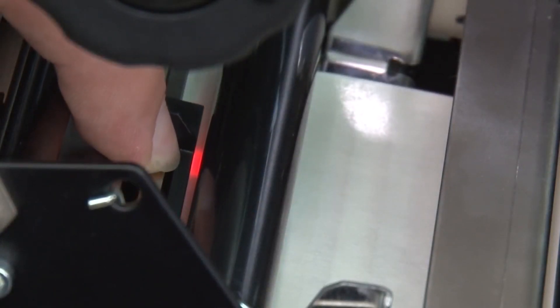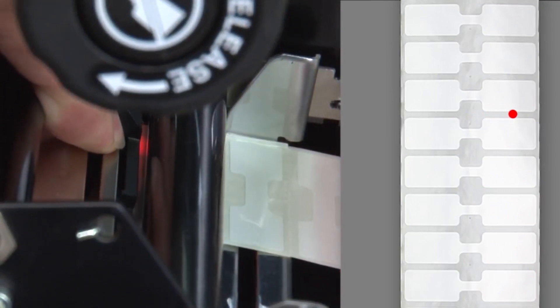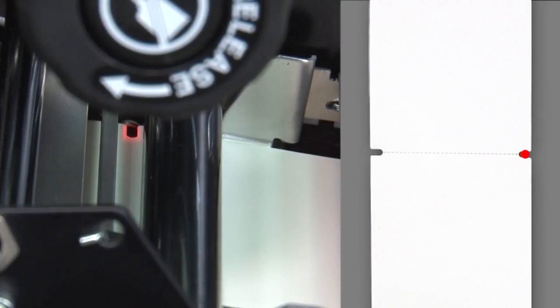If you are using media with a gap, also referred to as a web, a hole, or a notch, you want to make sure that the upper and lower sensors are in the optimal positions to identify that feature. Move the sensor to a location where the light passes through the notch or hole.